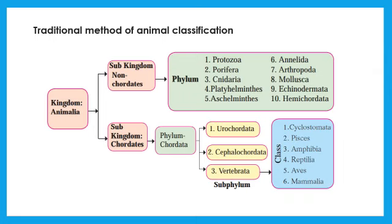Subphylum Vertebrata is further divided into six classes. Cyclostomata, Pisces, Amphibia, Reptilia, Aves and Mammalia. Girls, I hope you followed this. Draw this flow chart in your notebook and learn it.